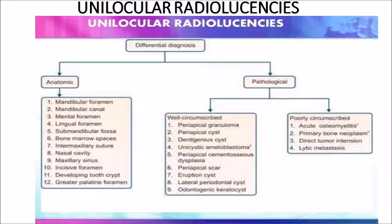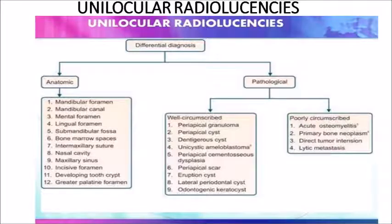Pathologic unilocular lesions can be well-circumscribed or poorly circumscribed. Well-circumscribed include periapical granuloma, periapical cyst, dentigerous cyst, unicystic ameloblastoma, periapical cemento-osseous dysplasia, periapical scar, eruption cyst, lateral periodontal cyst, and odontogenic keratosis. Poorly circumscribed include acute osteomyelitis, primary bone neoplasm, direct tumor extension, or lytic metastasis.